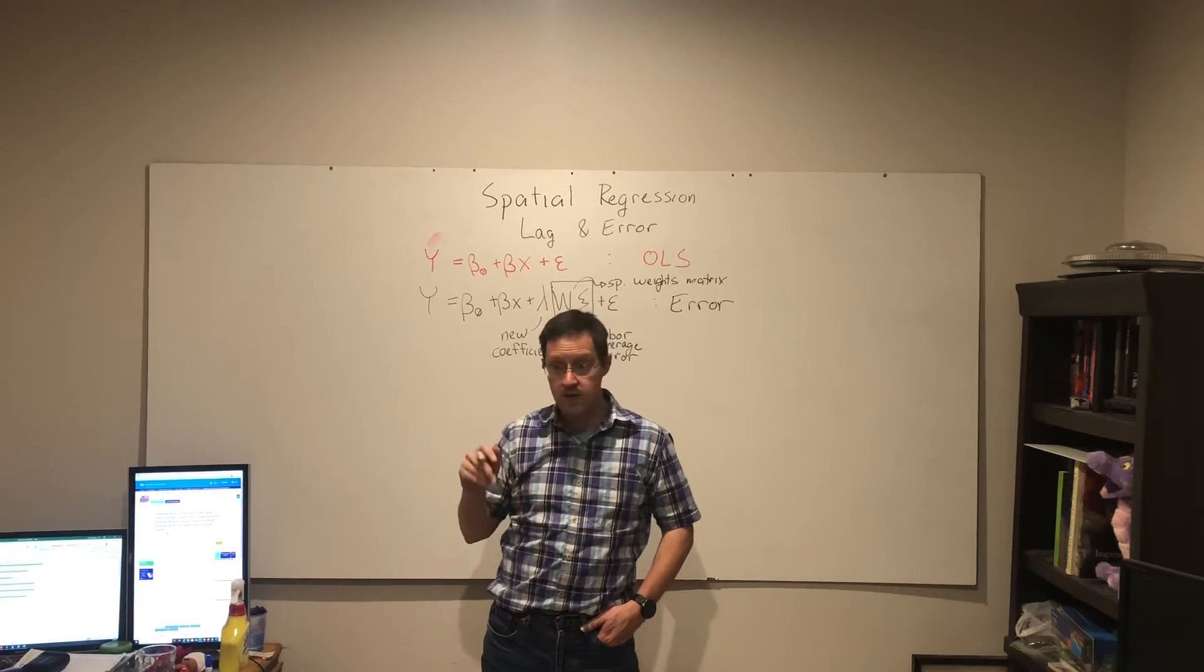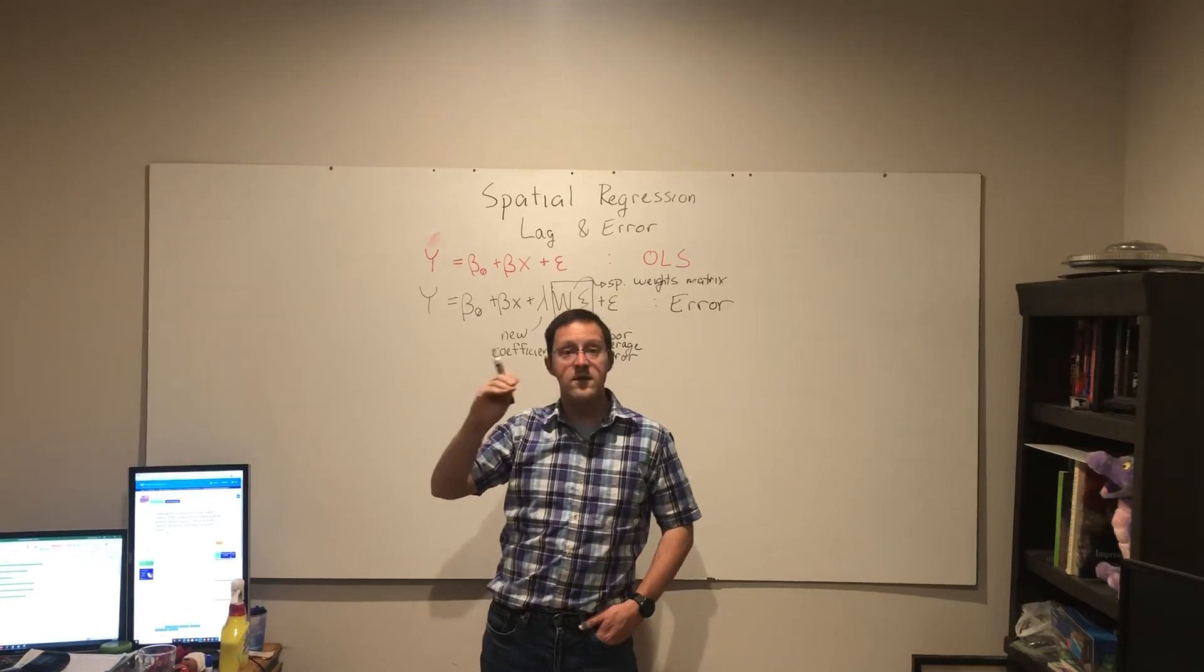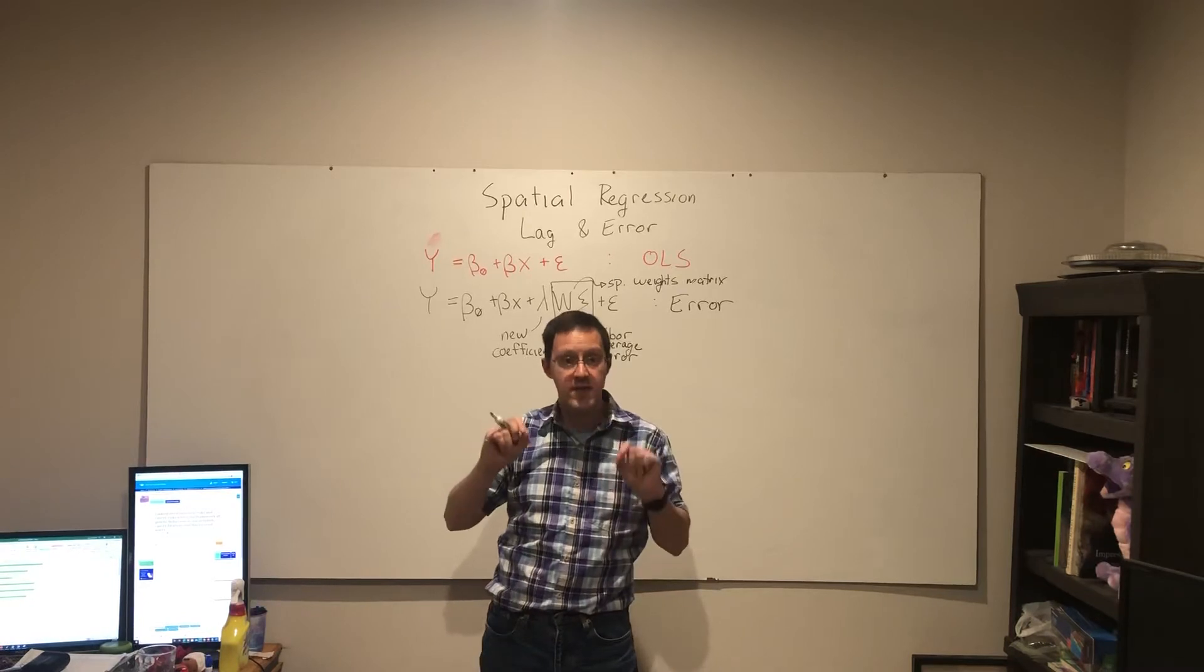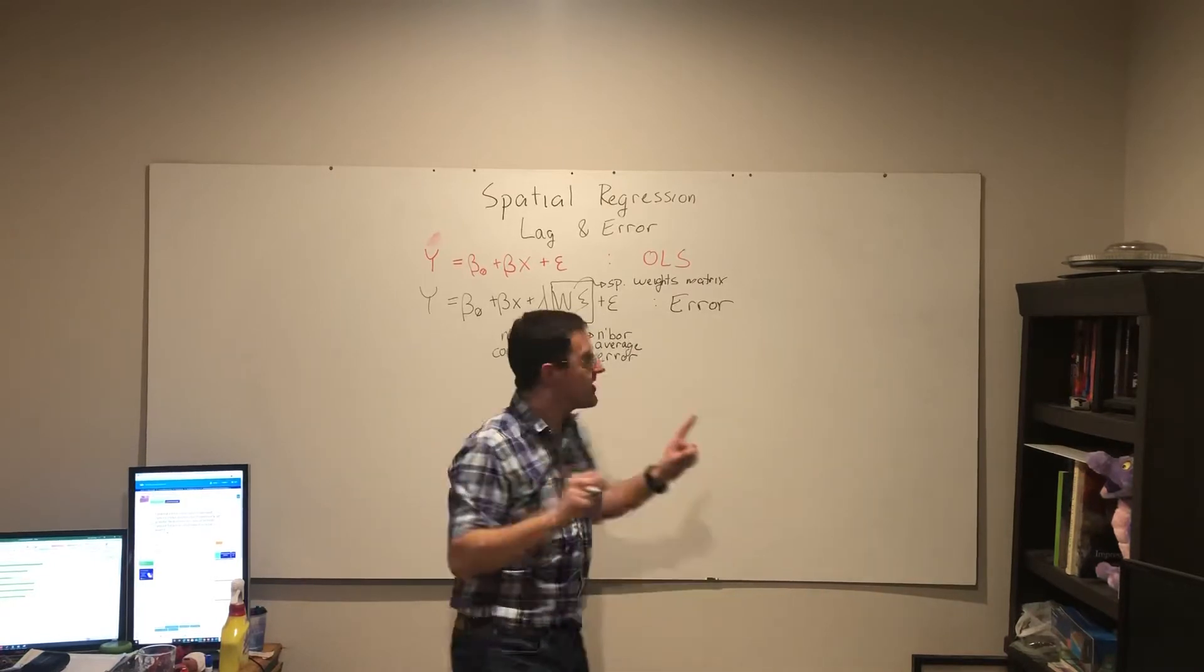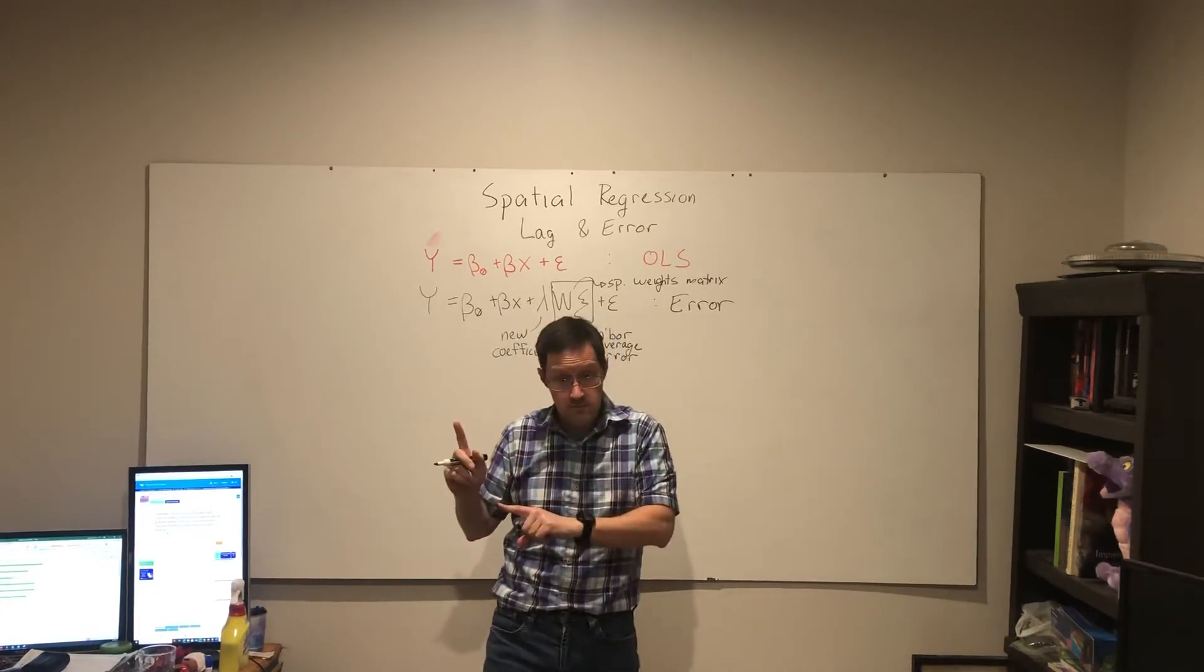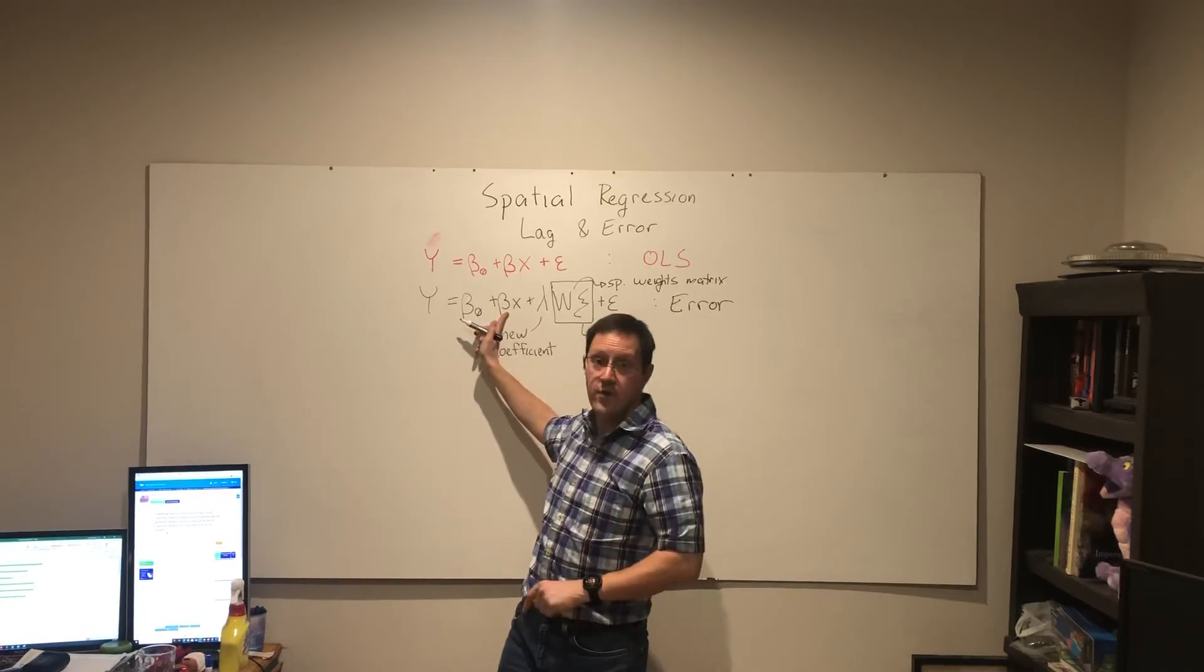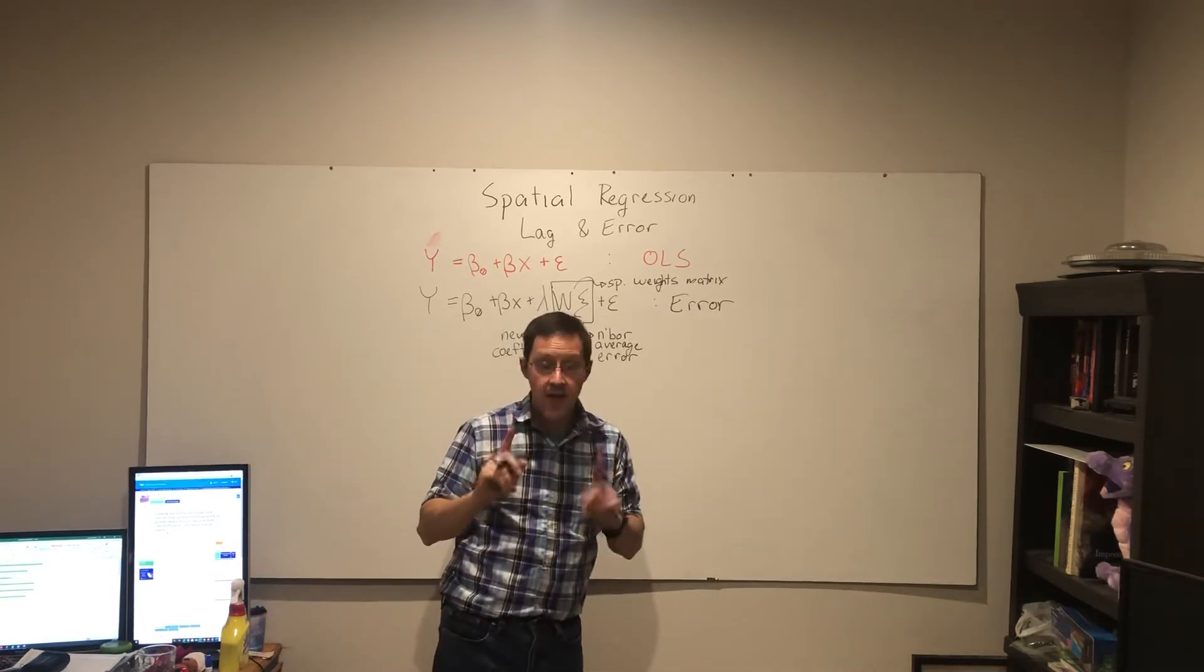Let's assume for the time being it's positive. If we find a significant positive relationship here, then we go back to what I had in the first video and use spatial error.